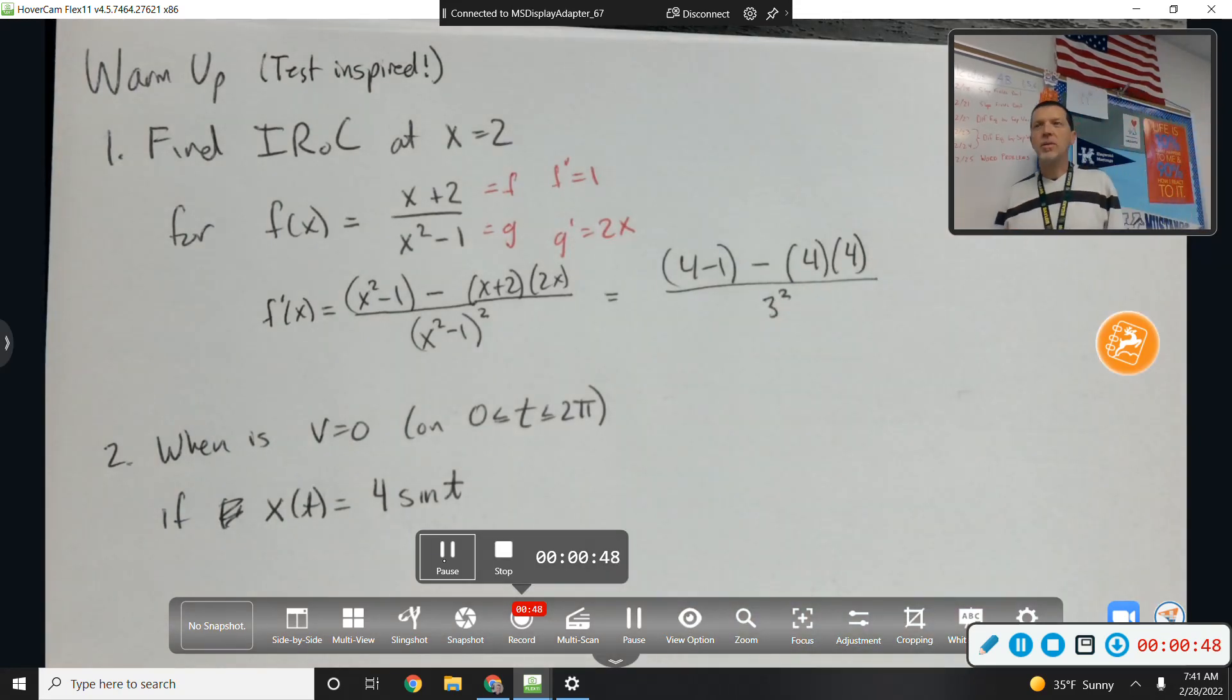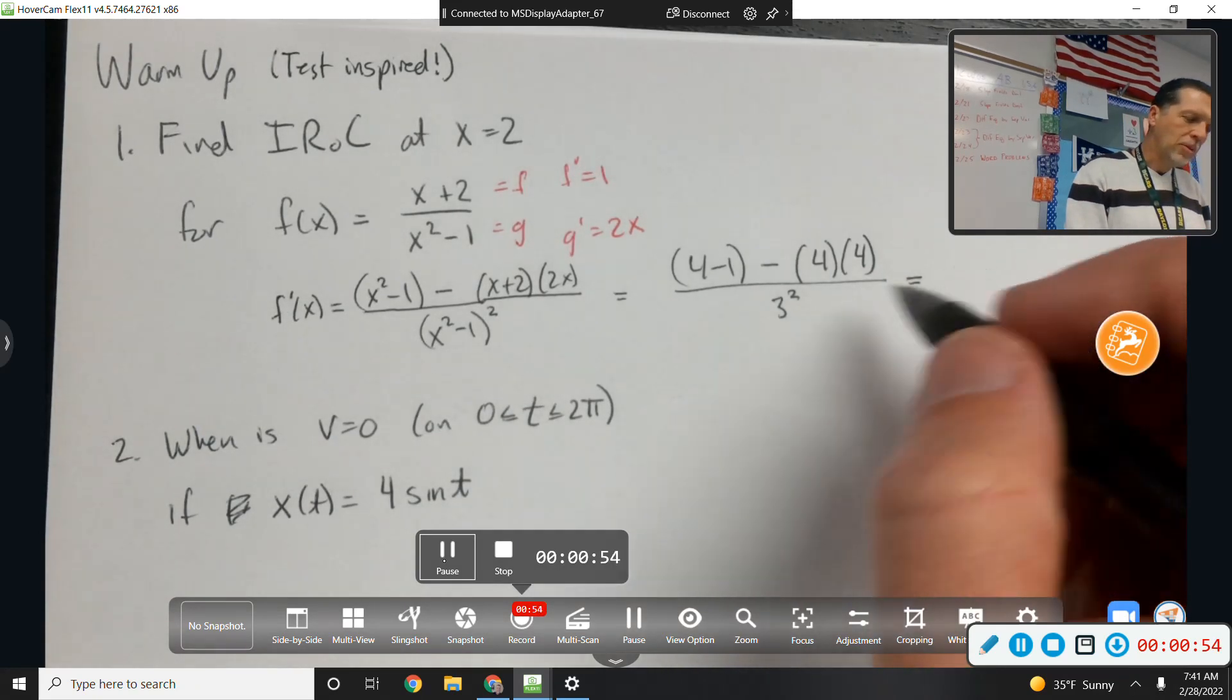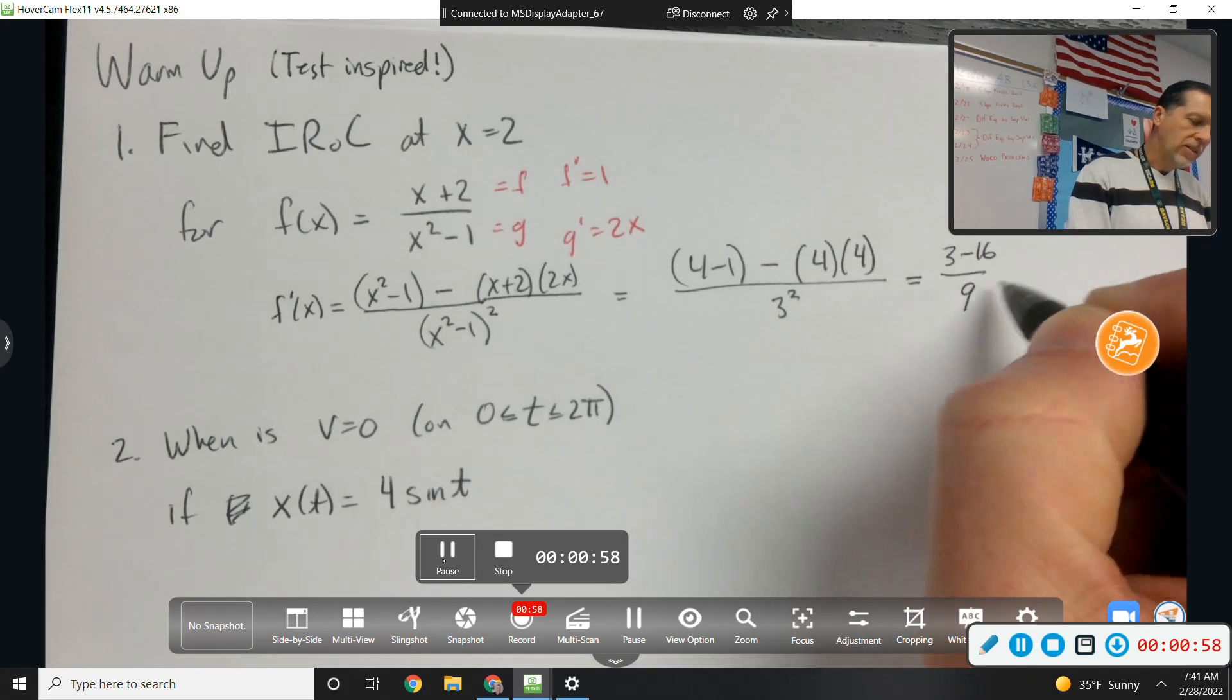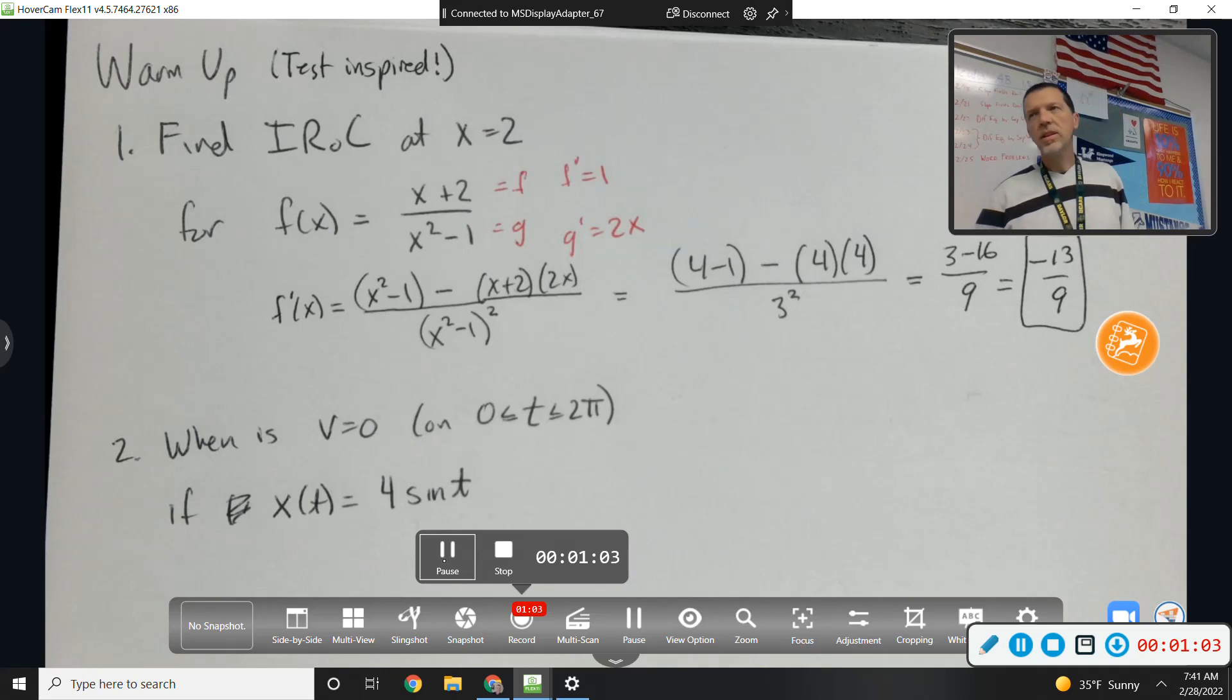And there, that's a safe stop. You'll be fine right there. My guess is this one is probably a multiple-choice one on the test. So 3 minus 16 over 9, so negative 13 ninths would be your multiple-choice simplified answer.